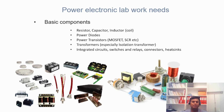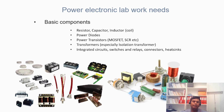Analog electronics uses signal diodes and signal transistors like BJTs, which can withstand only a few milliamps or low power. In power electronics, the voltage and current ratings are very high, so the power rating is also very high.